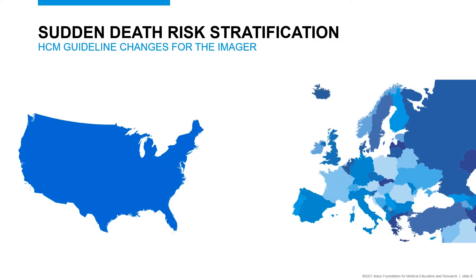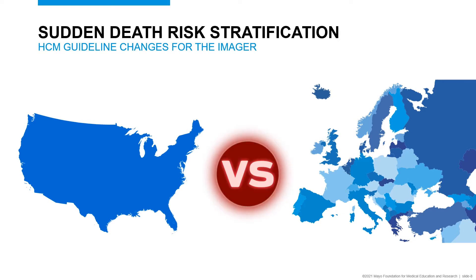Let's talk about sudden cardiac death risk stratification for HCM. How you approach that depends on which guideline you look at, because there's both the US ACC/AHA guideline and an ESC guideline, and there are some notable differences between these two. Let's take a look at the US 2020 guideline to start.